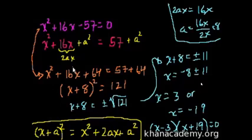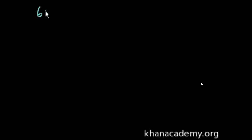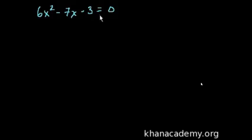Let's do another example. And why is it called completing the square? Because you have to add the 64 to kind of complete the square — to turn the left-hand expression into a squared expression. This next problem is going to be a hairier problem. Let's say I have 6x squared minus 7x minus 3 is equal to 0. You could try to factor it, but I don't enjoy factoring when I have a leading coefficient. The quadratic equation is essentially completing the square — it's a shortcut.